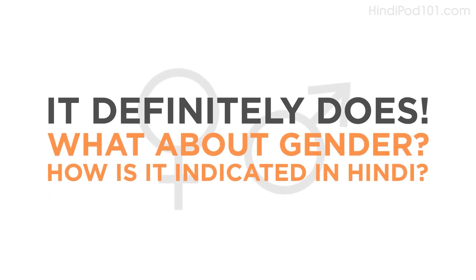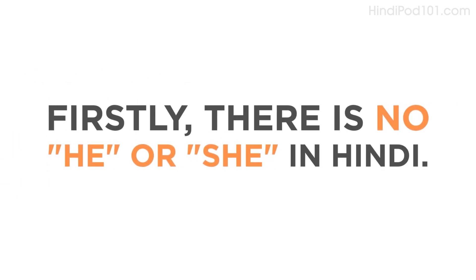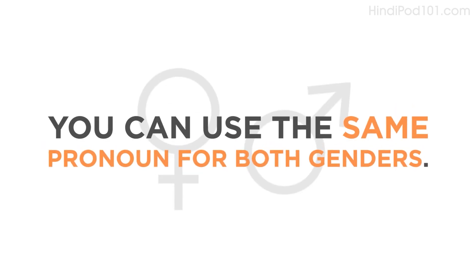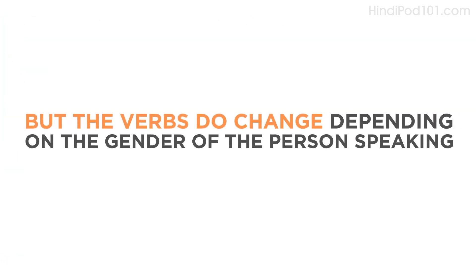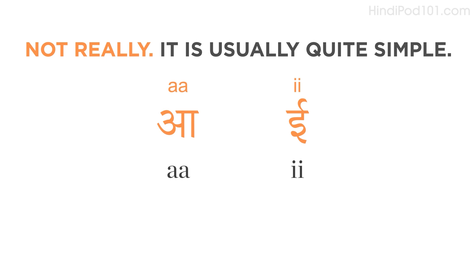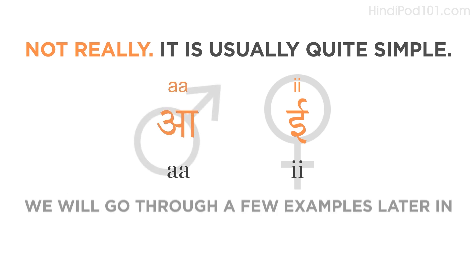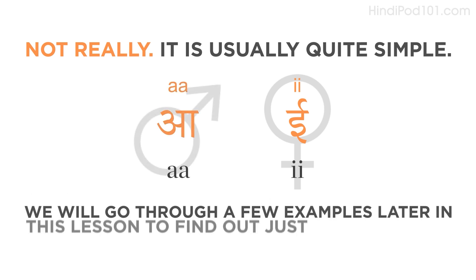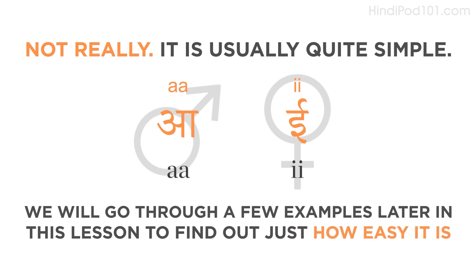What about gender? How is it indicated in Hindi? Firstly, there is no 'he' or 'she' in Hindi. You can use the same pronoun for both genders. But the verbs do change, depending on the gender of the person speaking and the gender of the person you are speaking to. It is usually quite simple. If a verb uses 'e' at the end, it means it is feminine. But if it uses 'a' at the end, it means it is masculine.